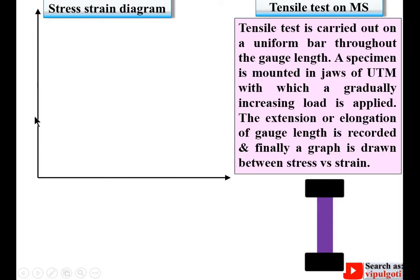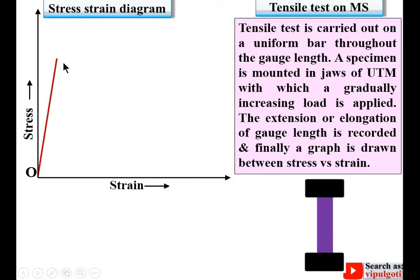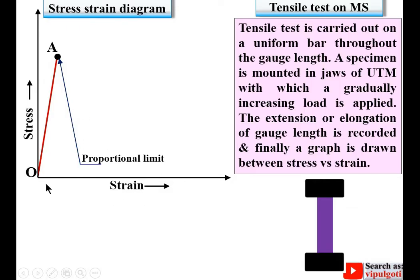Now I am going to draw the stress-strain diagram. On the y-axis is always stress and on the x-axis is always strain. This is the initial point O, and from O there is a straight line up to point A. This point A is known as the proportional limit. Proportional limit means stress is directly proportional to strain during the OA line.